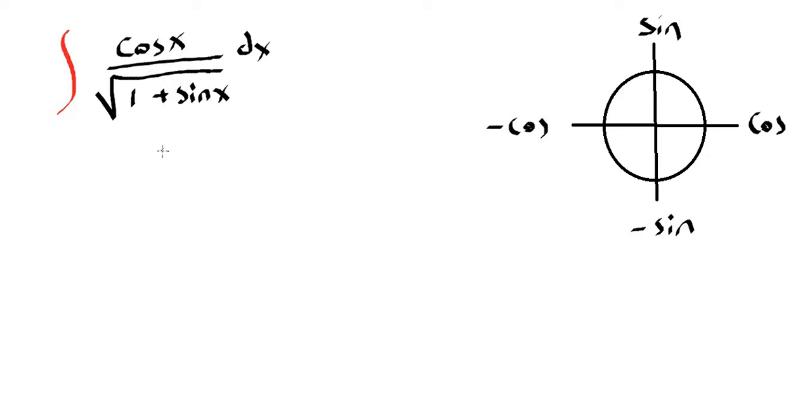The integral might seem tough but if you see sine and cosine on the numerator and denominator your first attempt should be substitution because derivative of sine is cosine and derivative of cosine is negative sine. So we're going to start with u substitution.